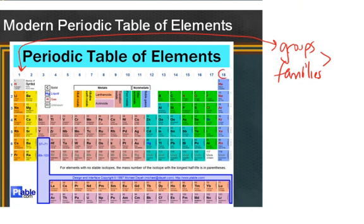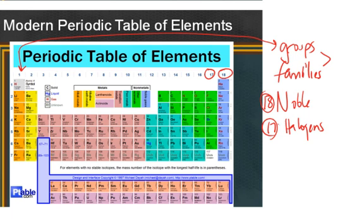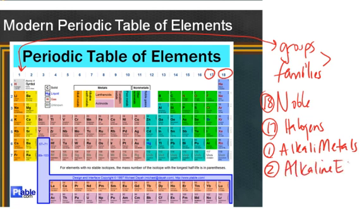For example, group 18 are the noble gases, and all of the elements in this family have similar chemical and physical properties. Group 17 is what we call the halogens. Group 1 are the alkali metals, and group 2 are the alkaline earth metals.